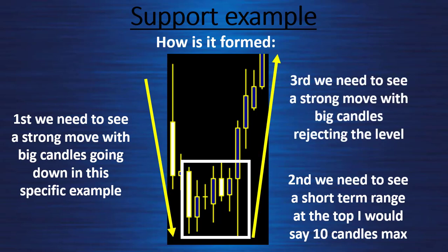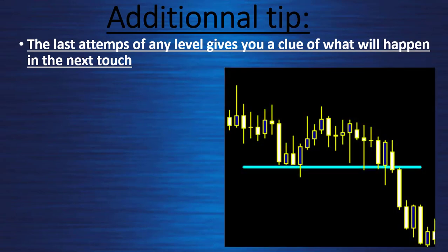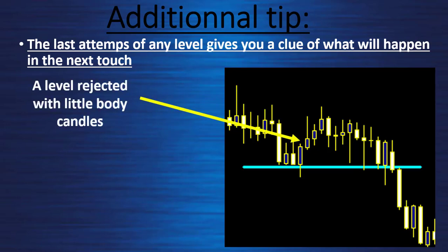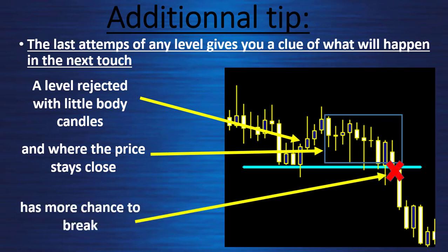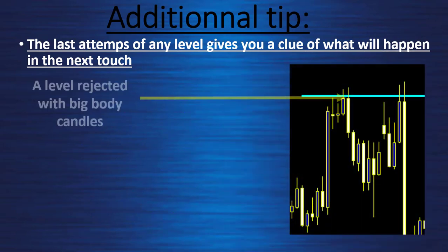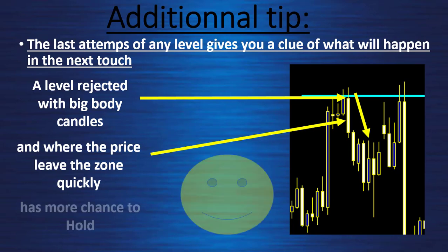Additional tip: the last attempt at any level gives you a clue about what will happen on the next touch. A level rejected with a little body candle — a small blue candle going up — and price doesn't leave the zone; it stays near support, and just after that the level breaks. So a level not widely rejected on its last touch has more chance to break. Conversely, a level rejected with a big body candle means price leaves the zone very fast, and when it comes back it has more chance to hold and reject very well.